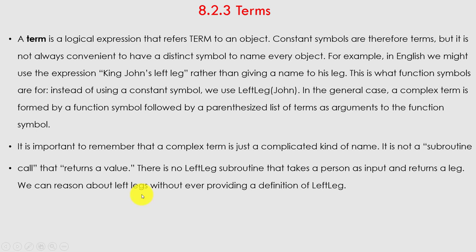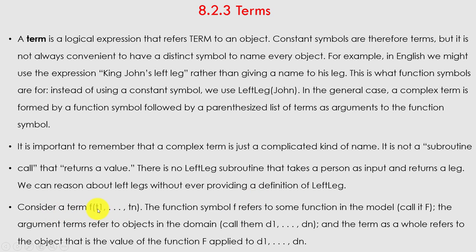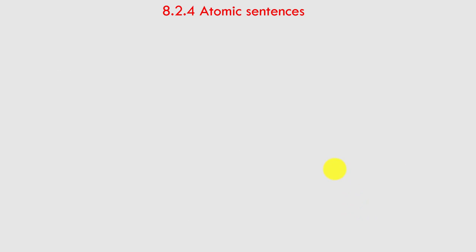We can reason about LeftLeg without ever providing a definition of left leg. Consider the term f(t₁, ..., tₙ): the function symbol f refers to some function in the model, call it F; the argument terms refer to objects d₁, ..., dₙ; and the term as a whole refers to the object that is the value of F applied to d₁, ..., dₙ.